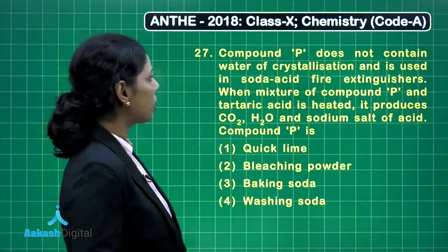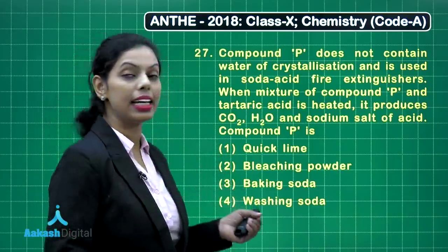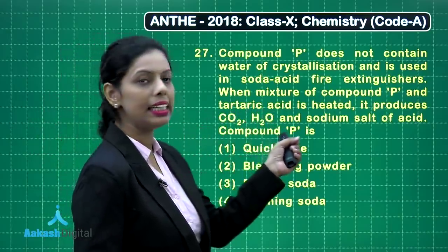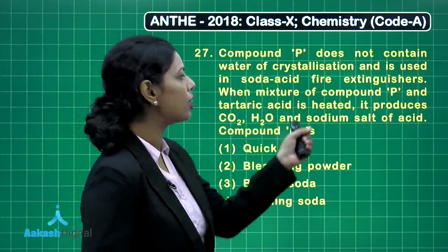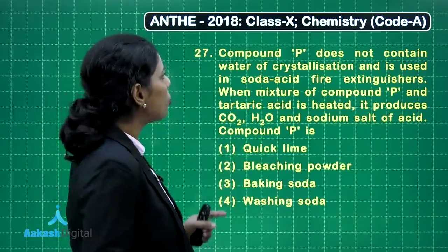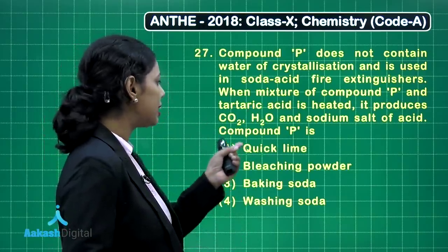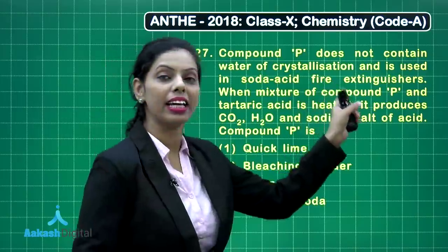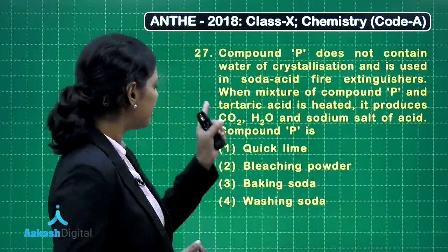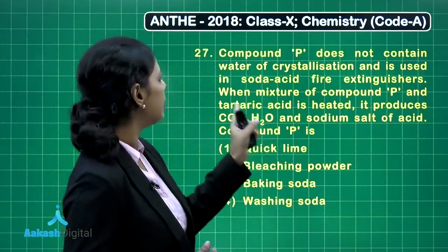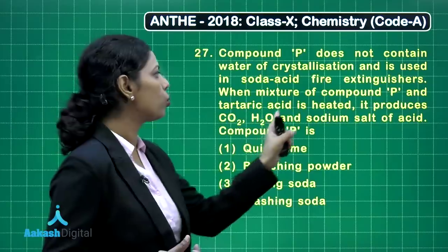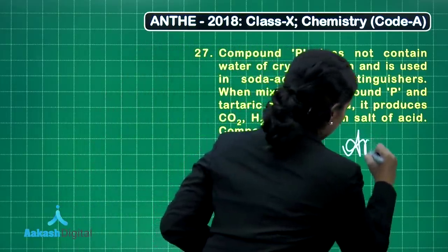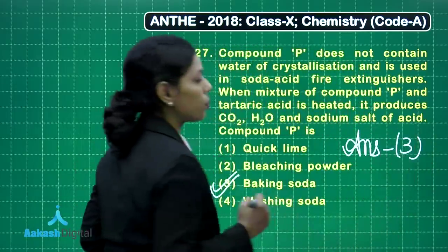Question number 27: Compound P does not contain water of crystallization and is used in soda acid fire extinguishers. When a mixture of compound P and tartaric acid is heated, it produces carbon dioxide, water, and sodium salt of the acid. Since compound P has no water of crystallization, it could be quicklime, bleaching powder, or baking soda. The hint that it is used in a soda acid fire extinguisher clearly points to baking soda. When baking soda is mixed with tartaric acid and heated, it produces CO₂, H₂O, and sodium salt of tartaric acid. So the correct answer is option three.